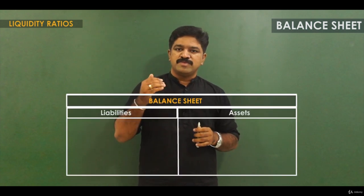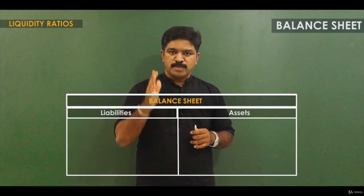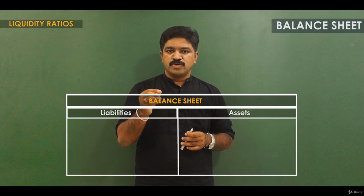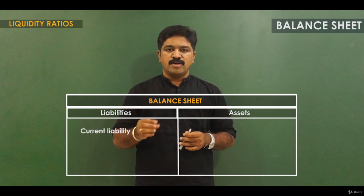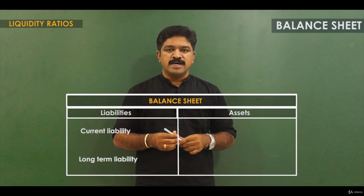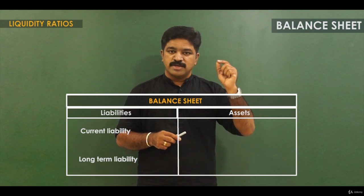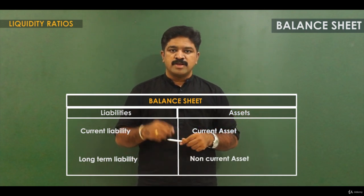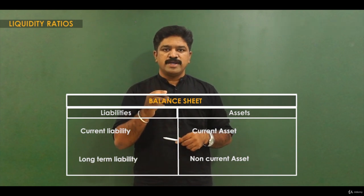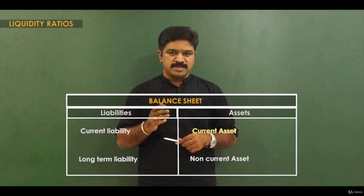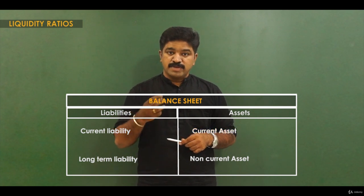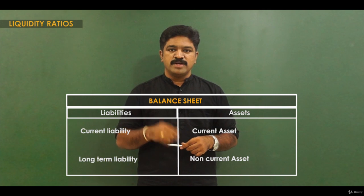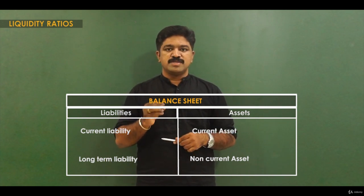A balance sheet will traditionally have liabilities on one side and assets on the other side. Liabilities can be divided into two: current liability and long-term liability. Similarly, the asset side can also be divided into two: current asset and non-current asset. Now let us focus only on current liabilities and current assets — when we say liquidity, it is actually with reference to these two items only.